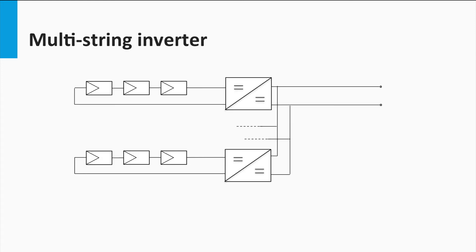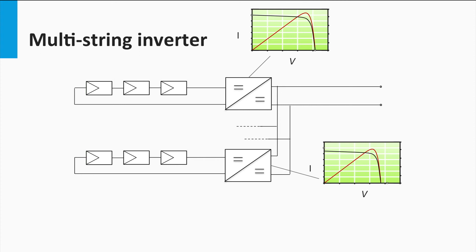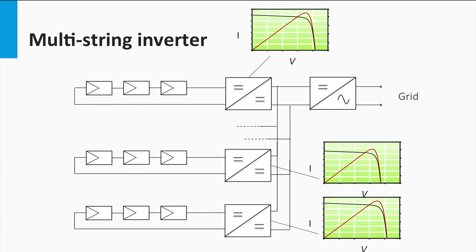Finally, the multi-string inverters. This concept seeks to combine the higher energy yield of a string inverter with the lower costs of the central inverter. Each of the strings is pre-power processed using low-power DC-DC converters, with each string having its own maximum power point tracker implemented alongside the DC-DC converter. All the converters are connected via a DC bus to the inverter and ultimately to the grid. Within a certain power range, only a new string with a dedicated DC-DC converter needs to be added to expand the system size.